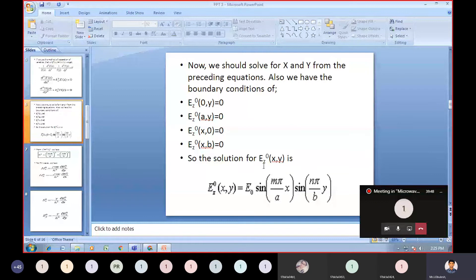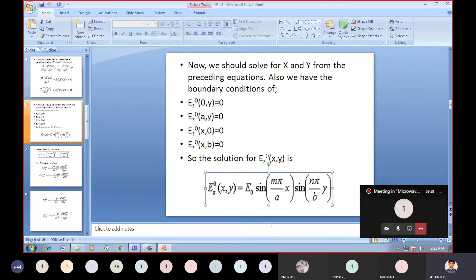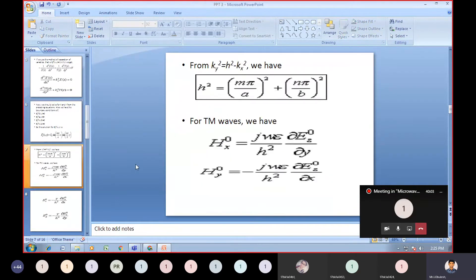The solution for E_z(x,y) is E_0 times sine(mπx/a) times sine(nπy/b). From that expression, H² equals (mπ/a)² plus (nπ/b)².